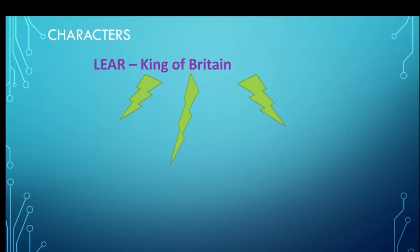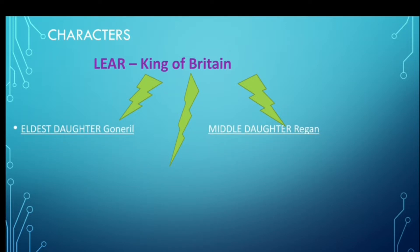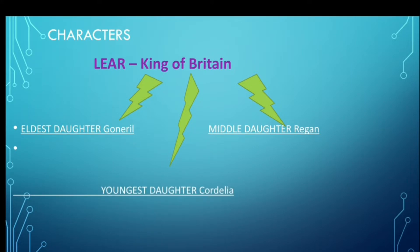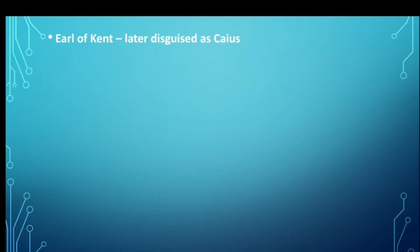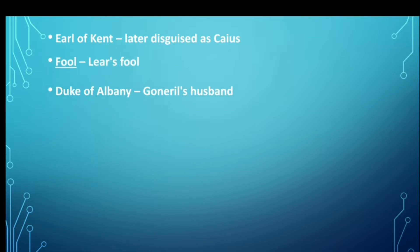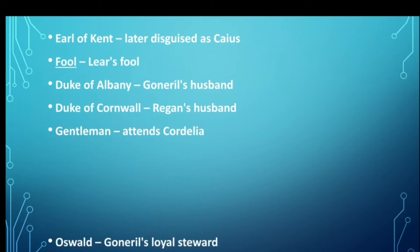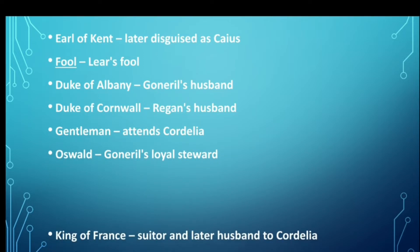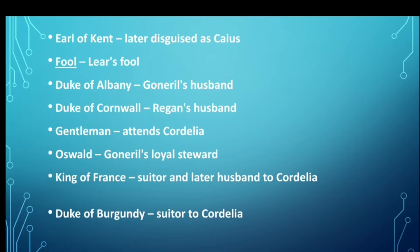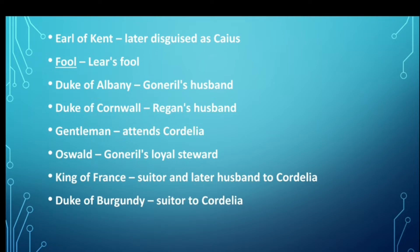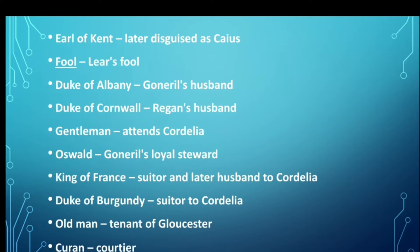Now we will talk about characters. Lear is King of Britain. His three daughters are: Goneril, the eldest; Regan, the middle; and Cordelia, the youngest. Other characters include the Earl of Kent, later disguised as Caius; the Fool, Lear's fool; Duke of Albany, Goneril's husband; Duke of Cornwall, Regan's husband; a Gentleman who attends Cordelia; Oswald, Goneril's steward; the King of France, suitor and later husband to Cordelia; Duke of Burgundy, who came as a suitor to Cordelia but rejects her because she has no wealth after Lear disowns her; and an Old Man, tenant of Gloucester.